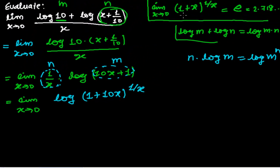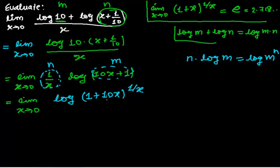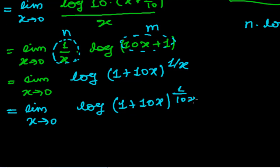So n times log m equals log 1 plus 10x to the power n, that is 1 upon x. You know, we are very close to this formula, almost very close, but here is 10x and here is x, so I have to multiply this x by 10. So in the next step, limit x tends to 0, log 1 plus 10x, 1 upon 10x. This was only 1 upon x, but I am writing here 10x, so I have to multiply by 10 also.